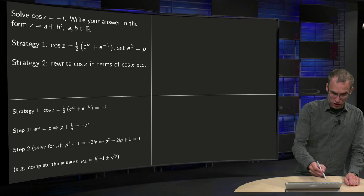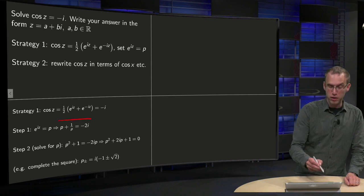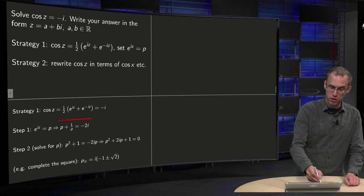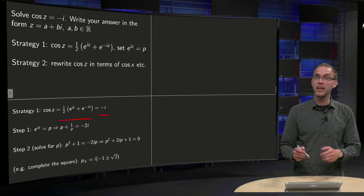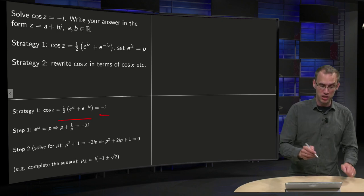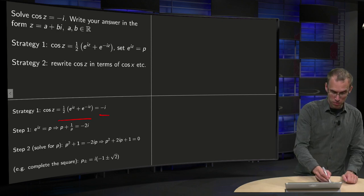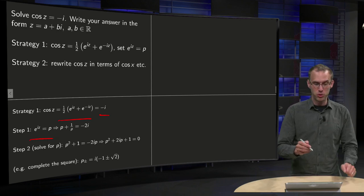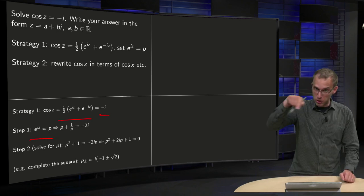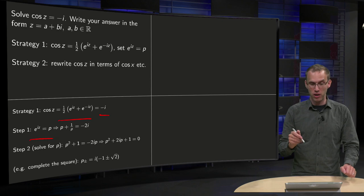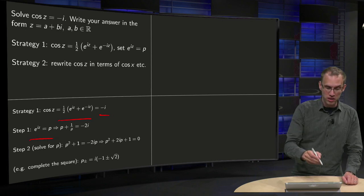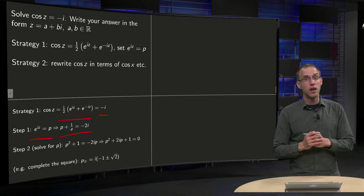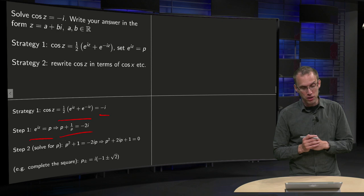We start at cosine z equals ½(e^(iz) + e^(-iz)) equals minus i. Then using the strategy of setting e^(iz) equals p, substituting this and bringing the ½ to the other side, you get minus 2i on the right-hand side, giving p plus 1 over p equals minus 2i.